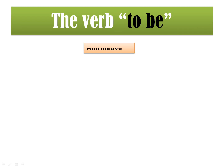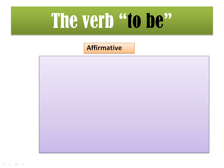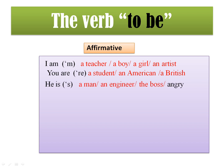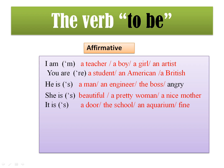The verb 'to be' in the simple present, in the affirmative form, works like this: I am — for example, I'm a teacher, I'm a boy, I'm an artist. You are — you're a student, you are an American. He is — he's a man, he's an engineer, he is the boss. She is — she's beautiful, she's a nice mother. It is — it's a door, it is the school, it's fine.